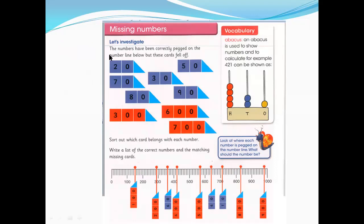Let's investigate. The numbers have been correctly pegged on the number line below but these cards fell off. You can see there is a line and different numbers here but some numbers are missing or fell down. So we need to correct them, the missing numbers and write correctly in order. Sort out which card belongs with each number.